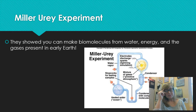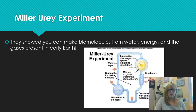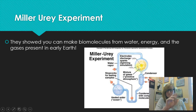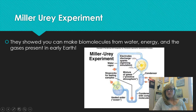Oxygen was not one of those gases, by the way. He reasoned there was probably lots of energy to drive chemical reactions - volcanic activity, lightning, heat - so he added little electrodes, little sparks, to simulate the natural energy that would have been present.